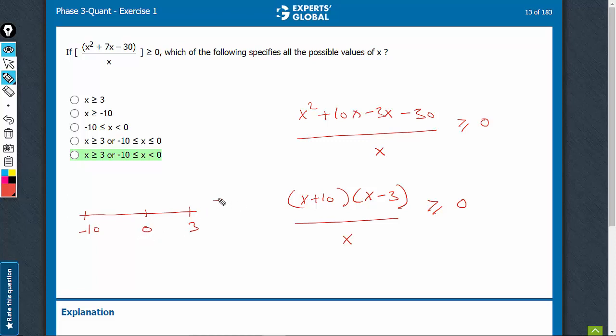The rightmost value is always positive, followed by alternate negative and positive signs.